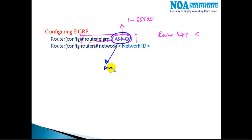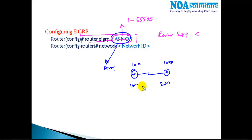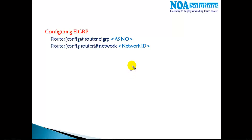The AS number can be any number, but ensure that it must be the same on both routers in order to form the neighborship and exchange routes. If you use 100 on one router and 200 on the other, they will not form the neighborship. Matching the AS number is the condition — use any number between 1 and 65535.